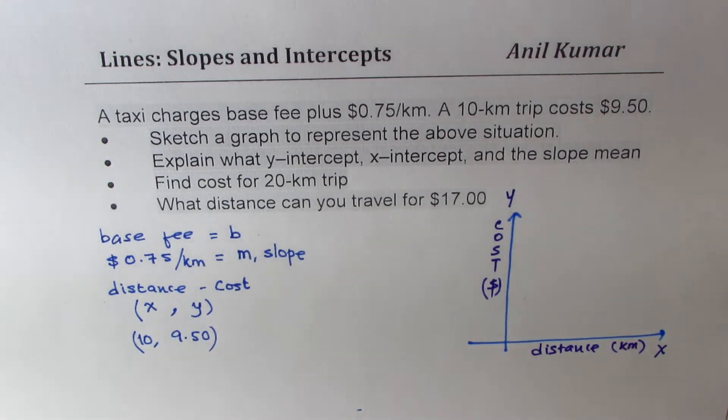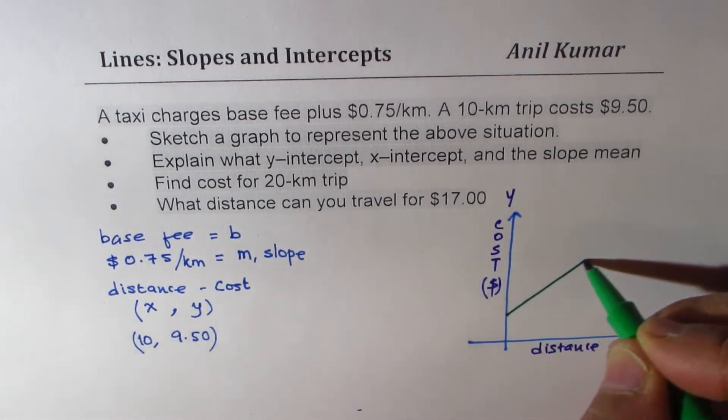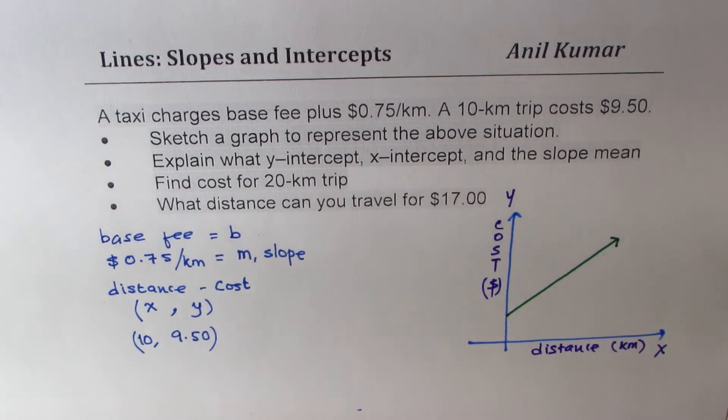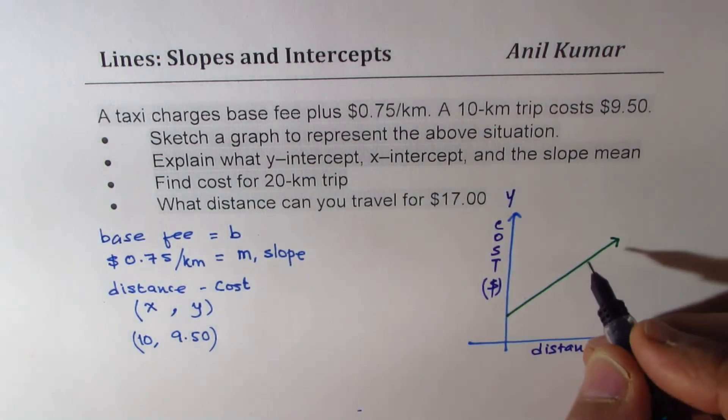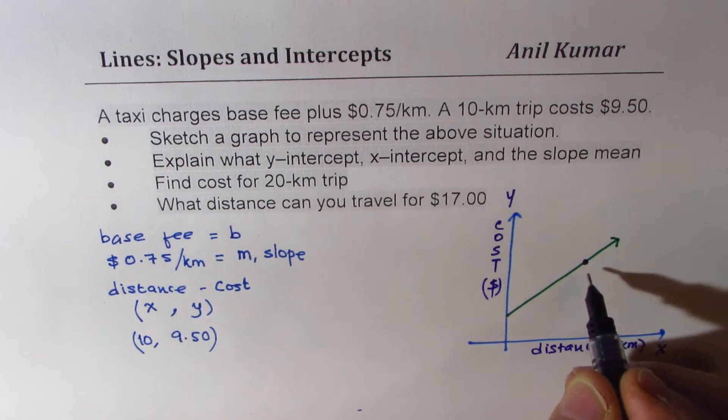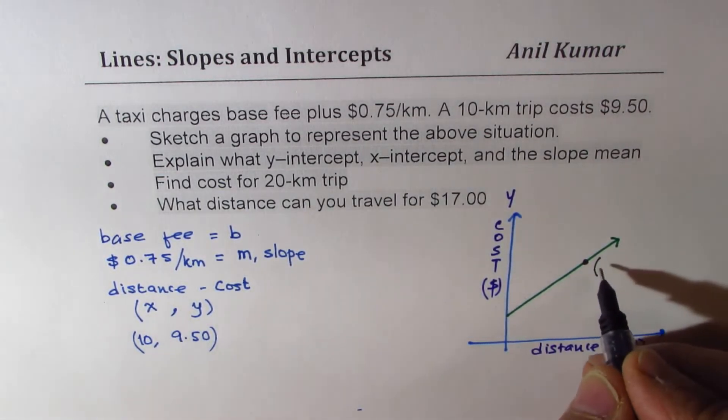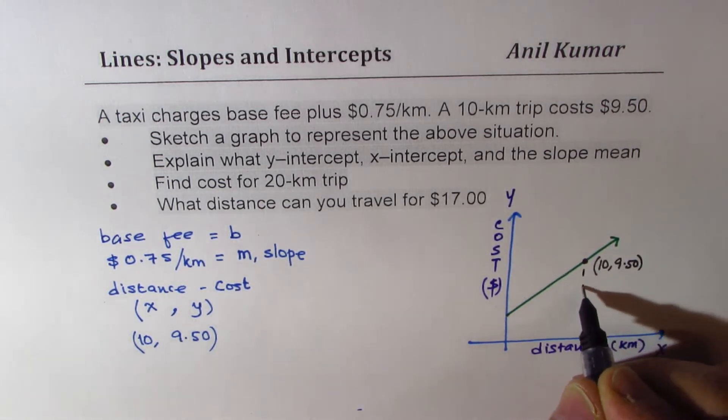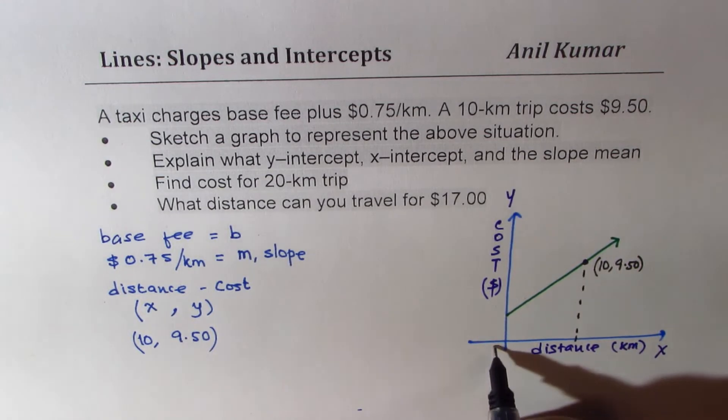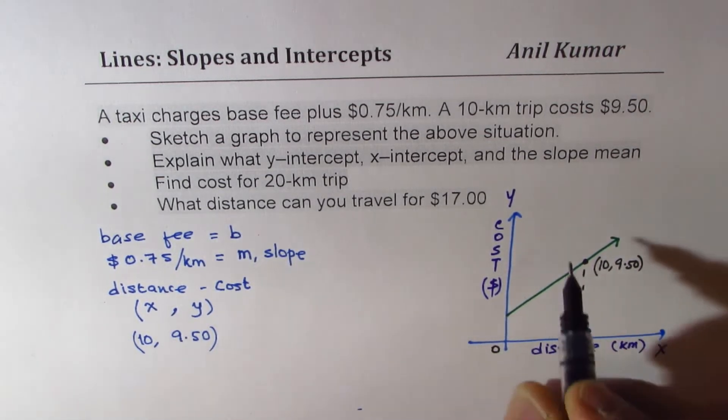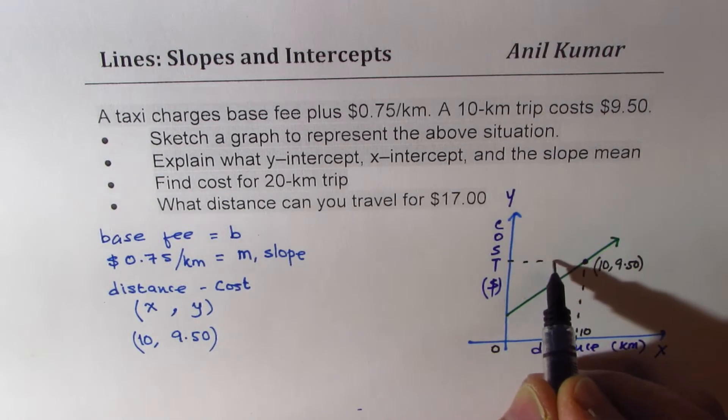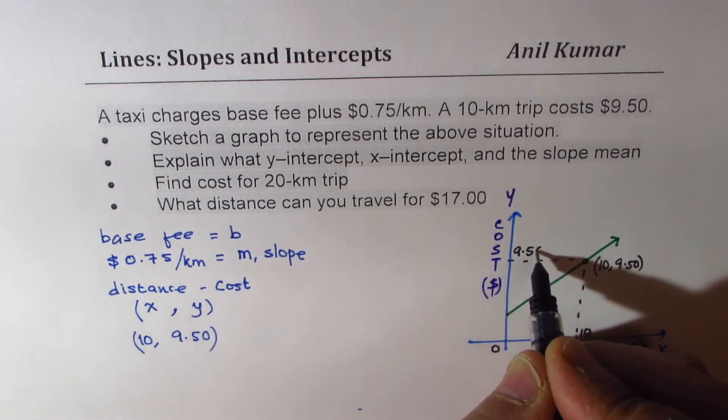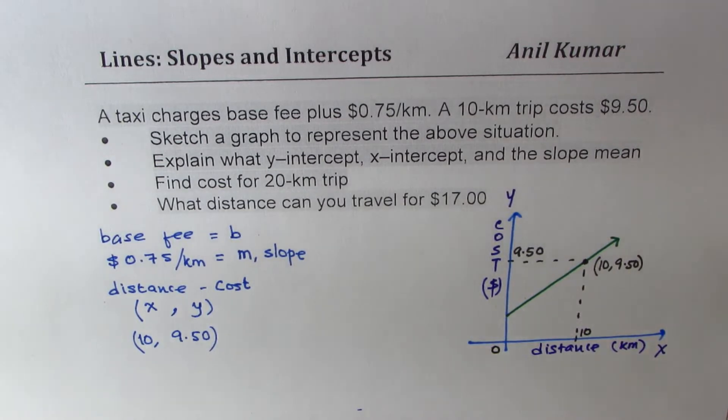We don't know what the base is, but we know there is a point somewhere, so let me just draw a line here. We know that it passes through a point, and this point is 10, 9.50. So 10 corresponds to the x value, and that is the cost, 9.50. So I hope the situation is absolutely clear.